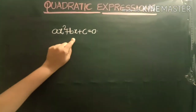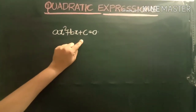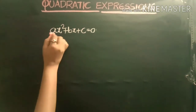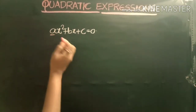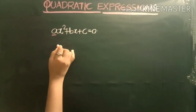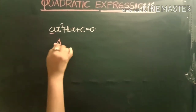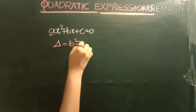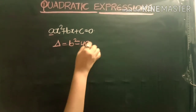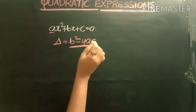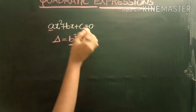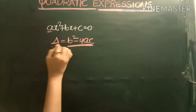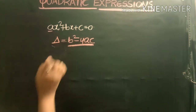Here ax² + bx + c = 0 is the quadratic equation with condition a ≠ 0, and the discriminant value delta is equal to b² − 4ac. So b² − 4ac is called the discriminant of the quadratic equation and it is denoted by delta.